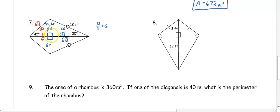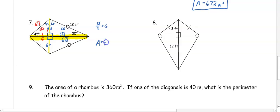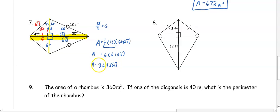Since we're finding the area, we focus on the diagonals. One diagonal is 6 plus 6 which is 12, and the other diagonal is 6 plus 6 root 3. The area equals one-half times 12 times the quantity 6 plus 6 root 3. Half of 12 is 6, and distributing gives the area equals 36 plus 36 root 3. We can't combine these since one is a constant and one has a radical, so we leave this as the exact answer.